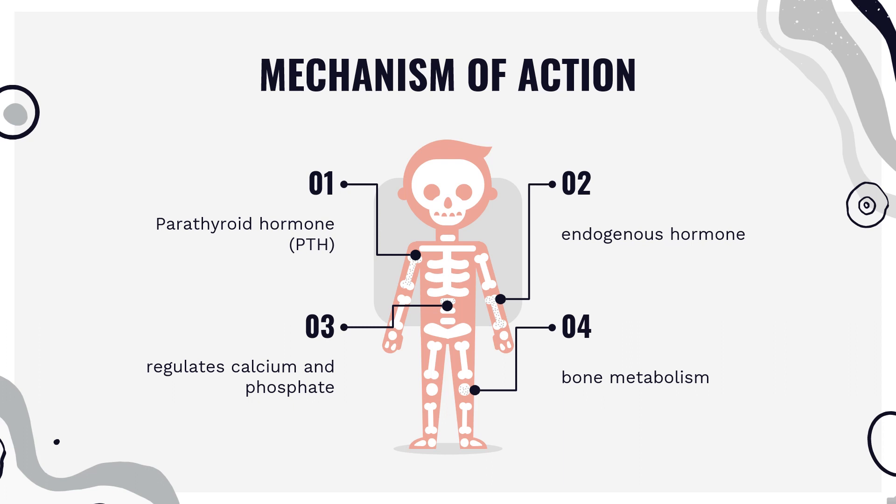Continuous exposure to PTH promotes bone resorption, whereas intermittent exposure to low-dose PTH can induce bone formation more favorably than bone resorption. Similarly, teriparatide's skeletal effects depend upon the systemic exposure pattern. Once daily administration stimulates bone formation on trabecular and cortical, periosteal and/or endosteal bone surfaces by preferential stimulation of osteoblastic activity over osteoclastic activity. Teriparatide mediates its osteoanabolic actions by binding to the N-terminal moiety to PTH type 1 receptors (PTH1R), which are G-protein-coupled receptors expressed on various cells, including osteoblasts, osteocytes, and renal tubular cells. Binding of teriparatide to PTH receptors on osteoblasts activates the downstream PKA and PKC-dependent signaling pathways that promote anabolic effects on bone.